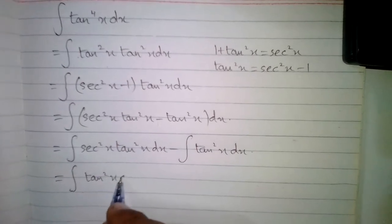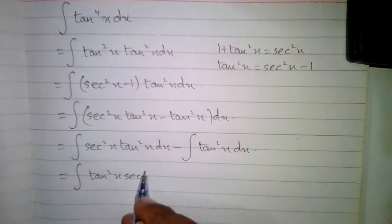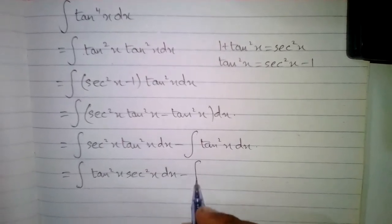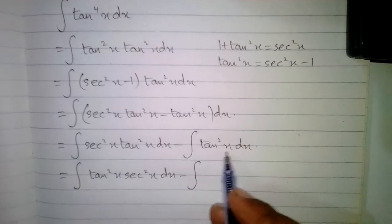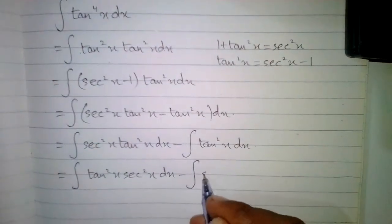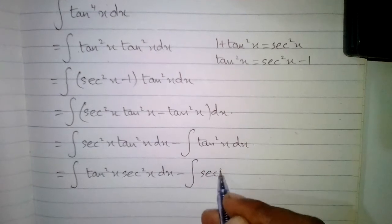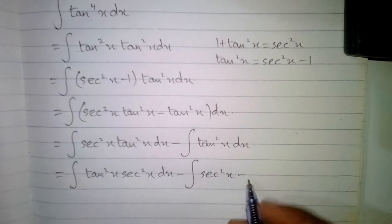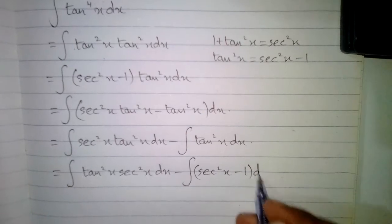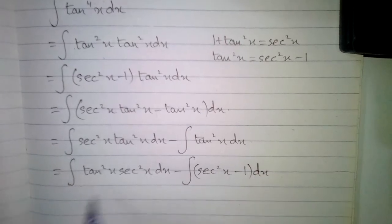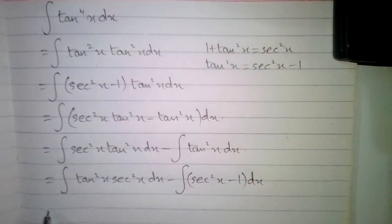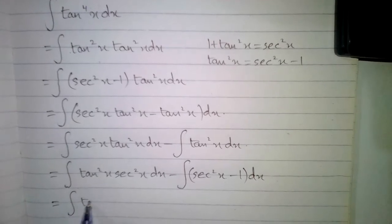We can rearrange this expression as the integral of tan²x · sec²x dx, minus the integral of tan²x. In place of tan²x we will put sec²x minus 1, so we have the integral of (sec²x minus 1) dx. Now we will apply this integral on both of these terms.